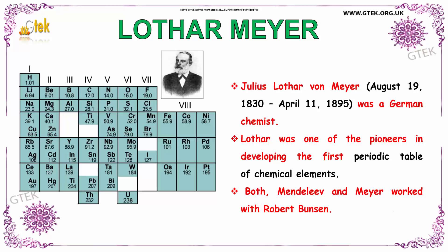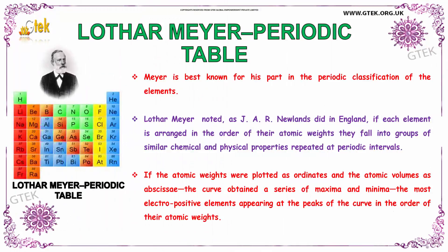Julian Lothar von Meyer was a German chemist. Lothar was one of the pioneers in developing the first periodic table of chemical elements. Both Mendeleev and Meyer worked with Robert Bunsen. Meyer is best known for his part in the periodic classification of the elements. Lothar Meyer arranged the elements in order of their atomic weights, and they followed groups of similar chemical and physical properties repeated at periodic intervals.